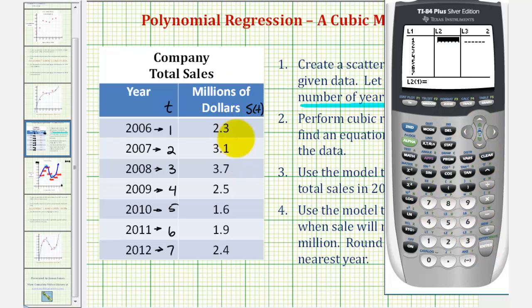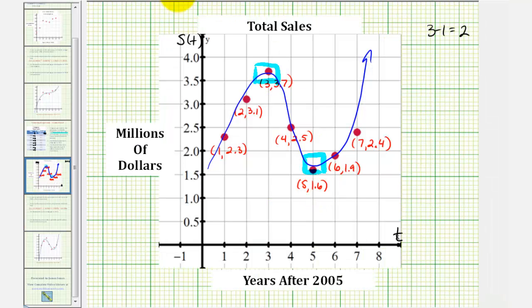L2 will be the total cells in millions of dollars, so we have 2.3, 3.1, and so on. And now we need to adjust the window before we show the scatter plot. So if we want our scatter plot to match our scatter plot here, let me go ahead and clear our function for a moment.